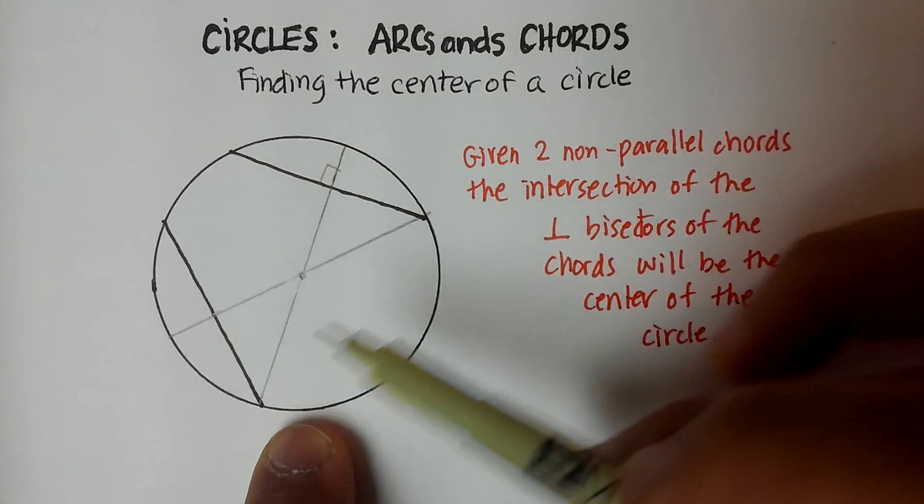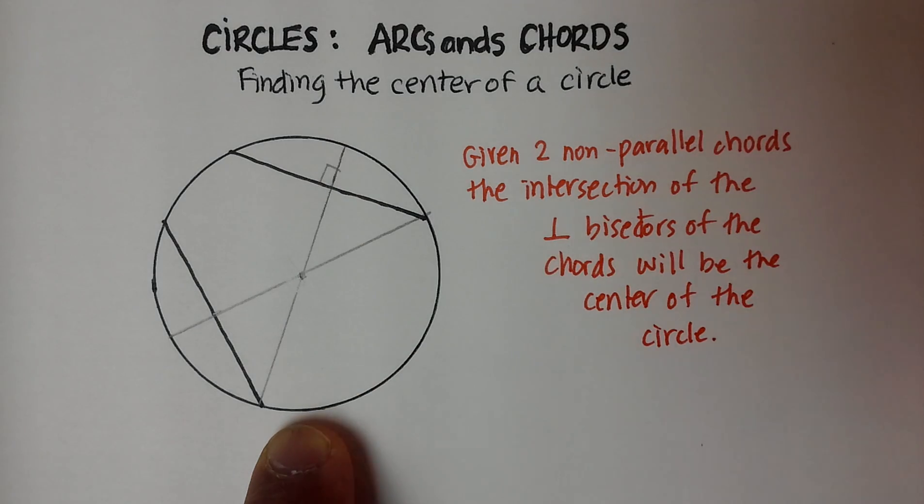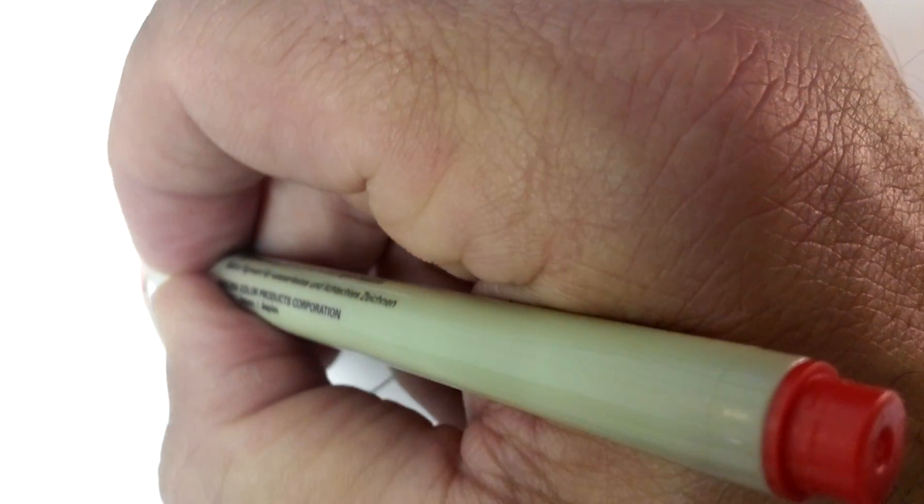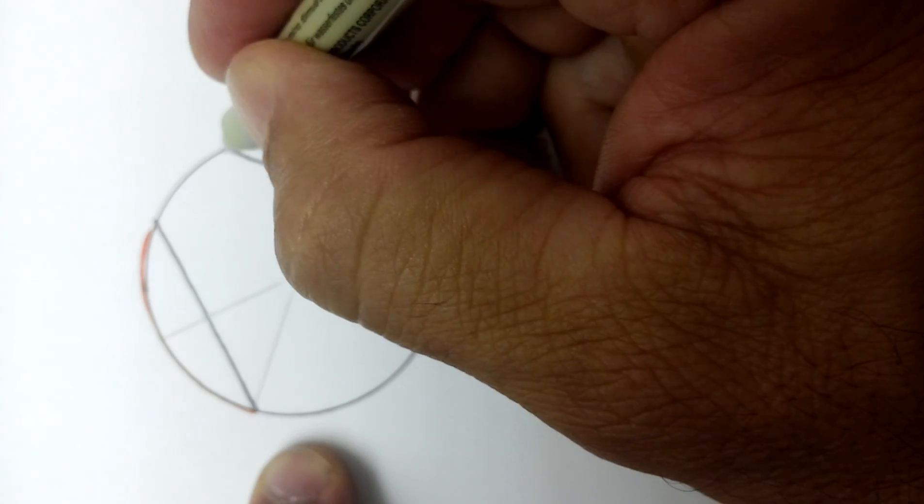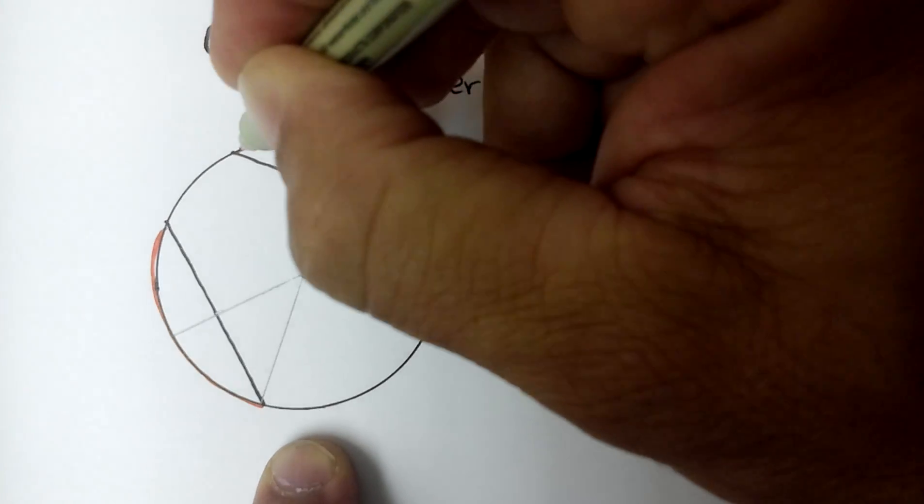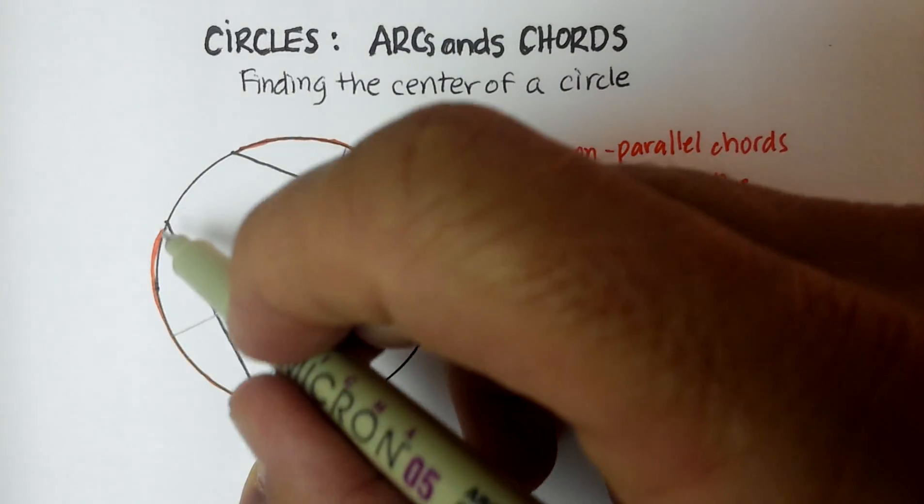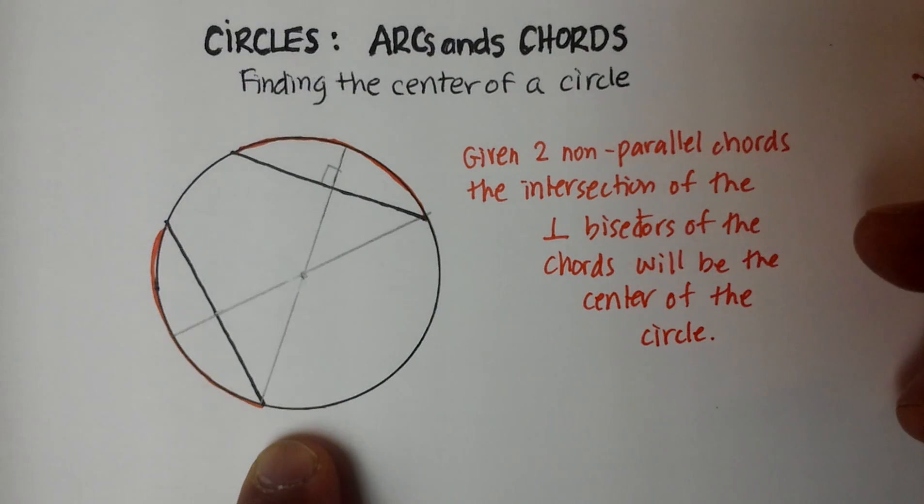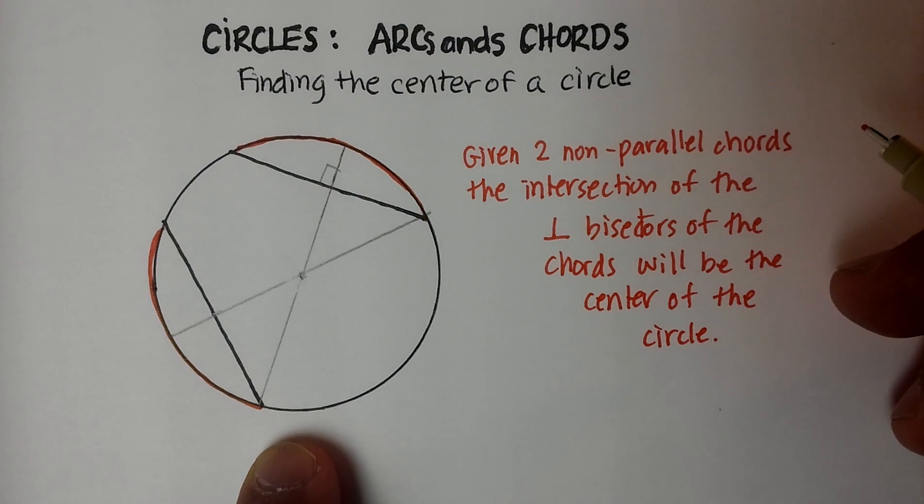So that's one real interesting fact about finding those perpendicular bisectors. The other interesting fact is that this arc and this arc will also be equal. Okay? If the chords are the same length, then the arcs are the same length as well. Okay. I hope that was helpful.